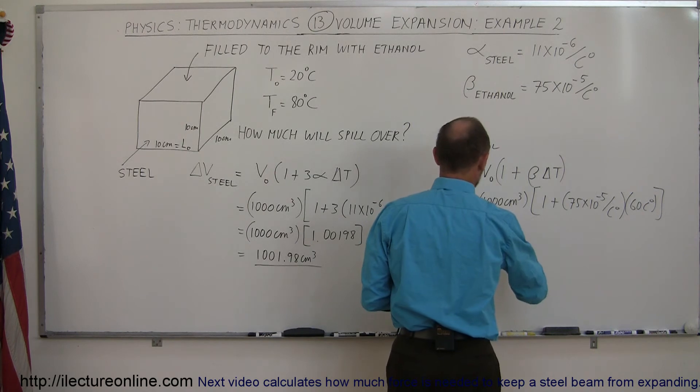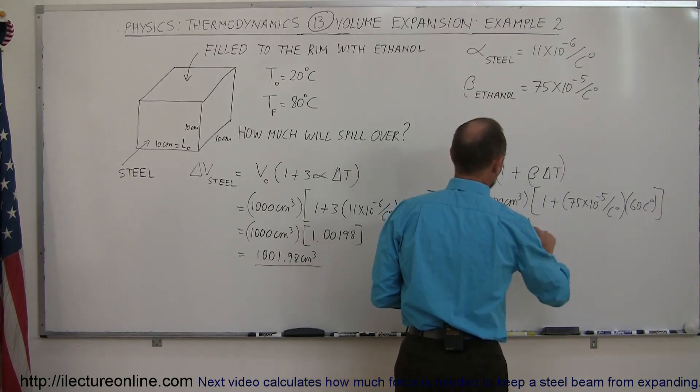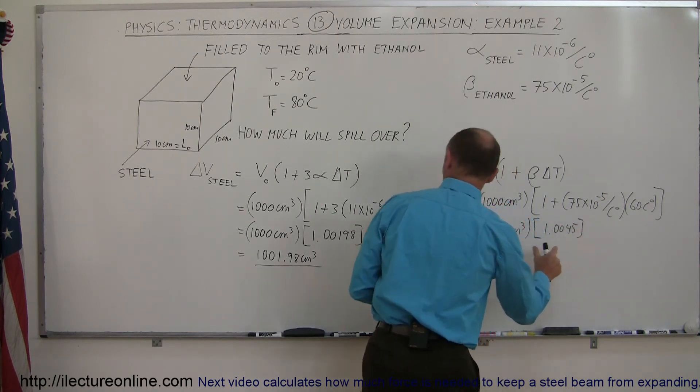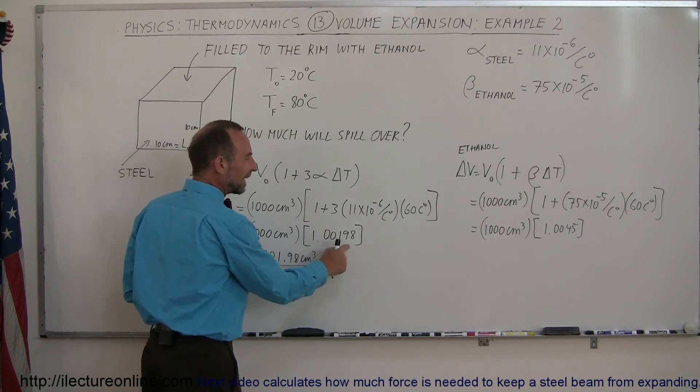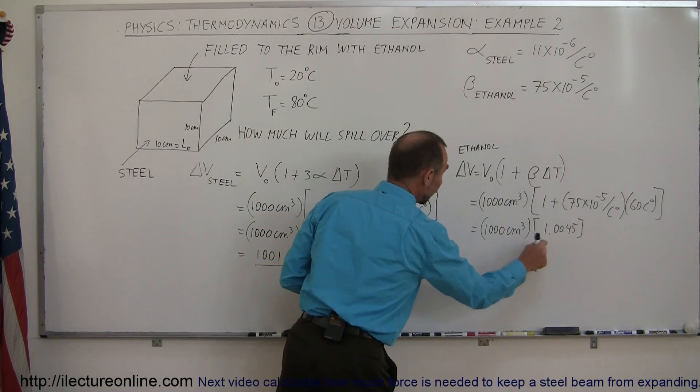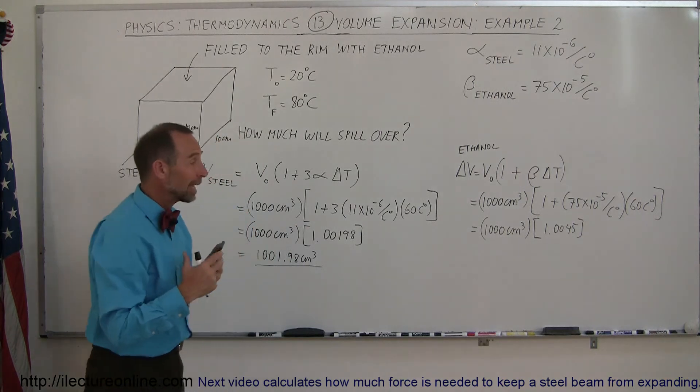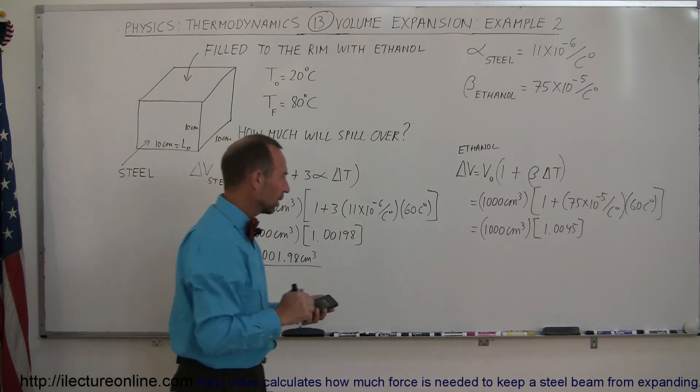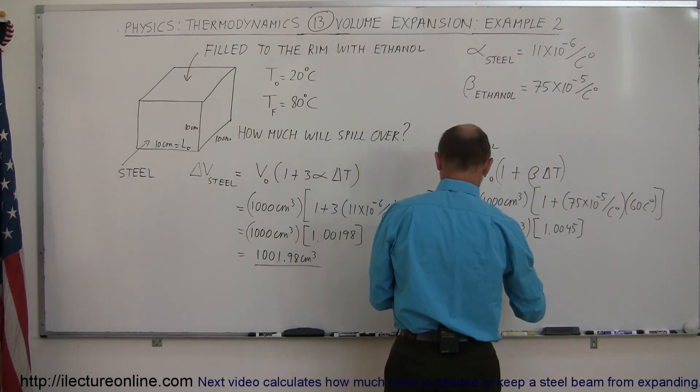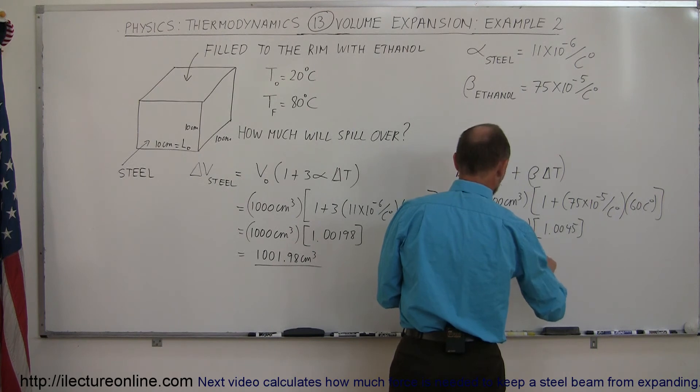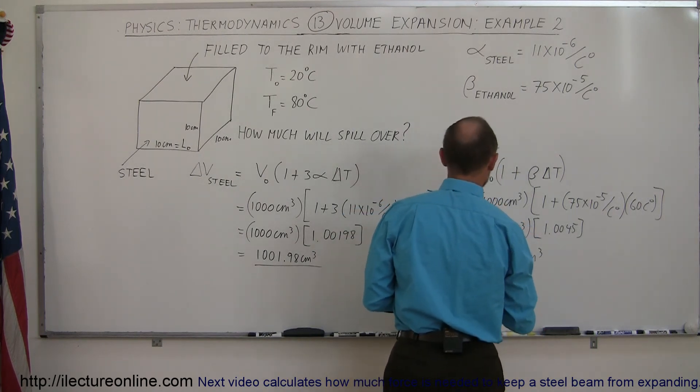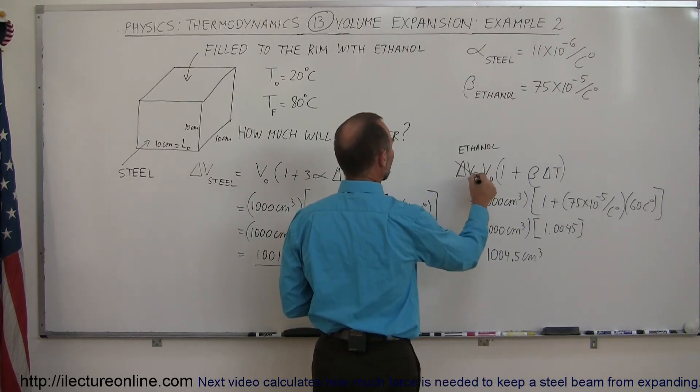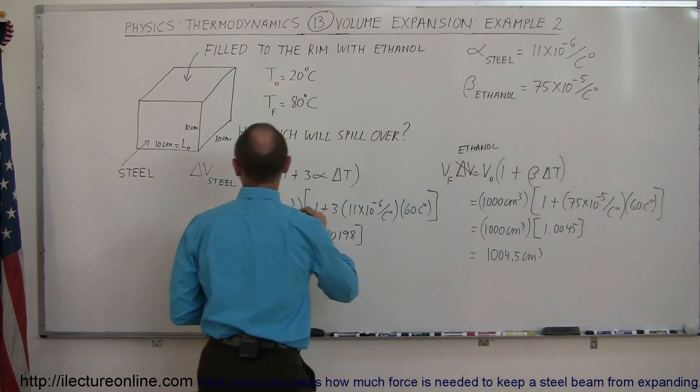And so this is equal to 1,000 cubic centimeters multiplied times 1.0045. And looking at this alone, notice that this was 1.00198, this is 1.0045. So you can see that the multiplication factor is quite a bit larger for the ethanol. If we now go ahead and multiply times 1,000, we can see that this is equal to 1,004.5 cubic centimeters. So you can see that this is not really the change in the volume. This is actually the new volume, V final, V final.